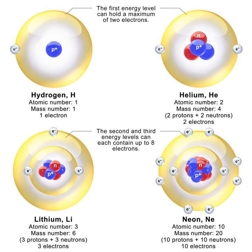Free neutrons are unstable, although they have the longest half-life of any unstable subatomic particle by several orders of magnitude. Their half-life is still only about 10 minutes, so they can be obtained only from sources that produce them continuously. A small natural background flux of free neutrons exists everywhere on Earth. In the atmosphere and deep into the ocean, the neutron background is caused by muons produced by cosmic ray interaction with the atmosphere. These high-energy muons are capable of penetration to considerable depths in water and soil. There, in striking atomic nuclei, among other reactions they induce spallation reactions in which a neutron is liberated from the nucleus.